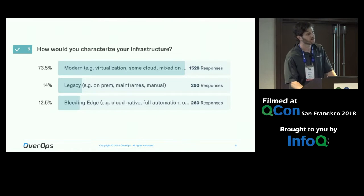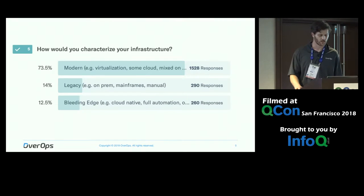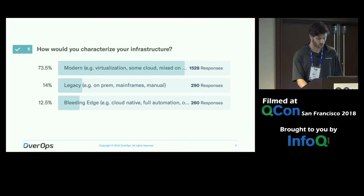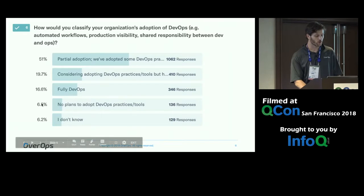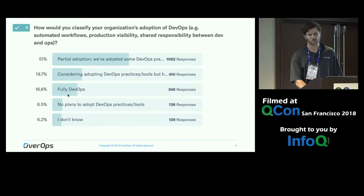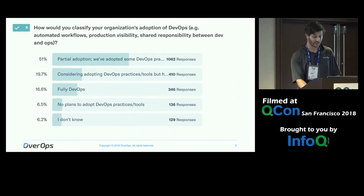If you ask people how they see their infrastructure — is it modern or legacy — most people nowadays are running on what they perceive to be modern infrastructure, which is pretty fascinating. When asked how they classify their organization's adoption of DevOps, production visibility, and automation, the minority believe themselves to be true DevOps. Most are halfway through this journey, which is interesting because we've been talking about this as an industry for a decade or so.